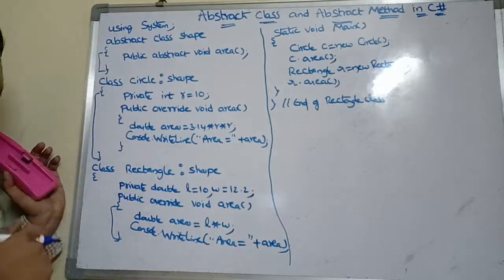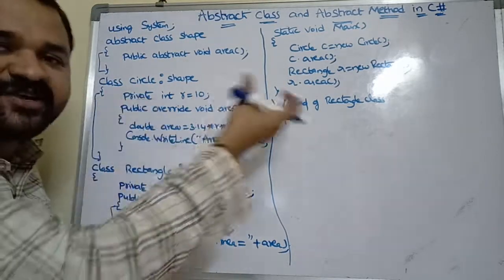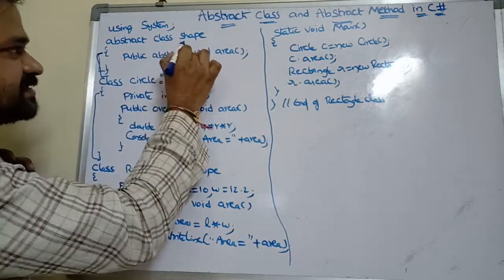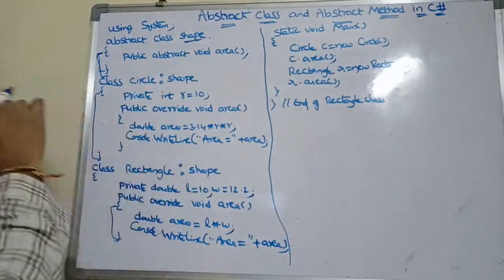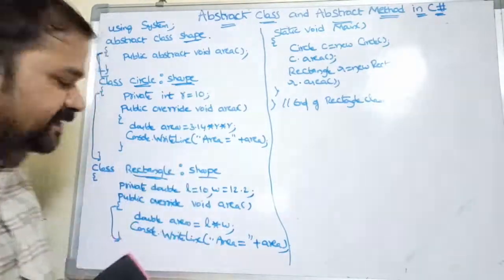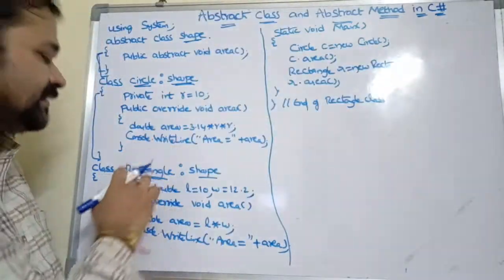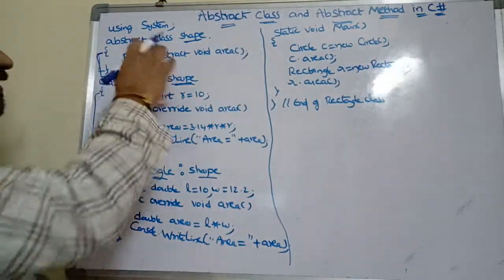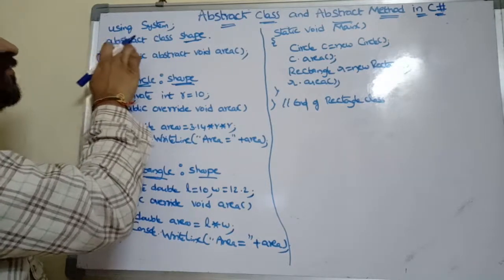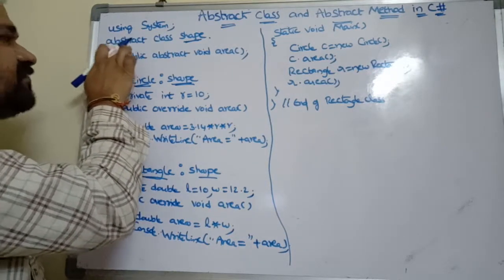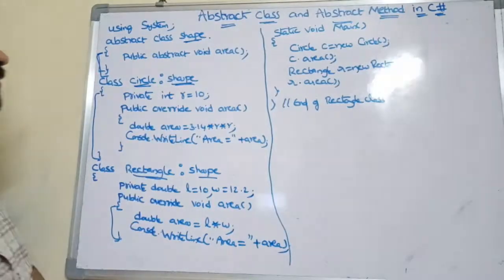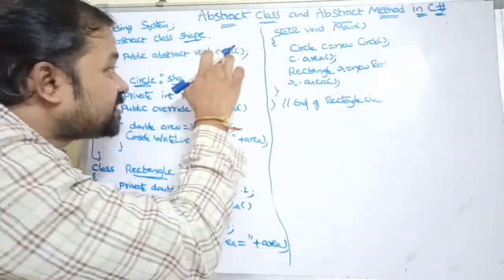Now let's see this example. We have 'using System' because we are using Console.WriteLine. In this program we use three classes: the first class is the Shape class. Shape is the base class, while Circle and Rectangle are the derived classes which are derived from Shape. The main method is defined in the Rectangle class. An abstract class is defined with the keyword 'abstract' — before the class keyword we use the keyword 'abstract', and the name of the class is Shape. This class contains an abstract method called Area.